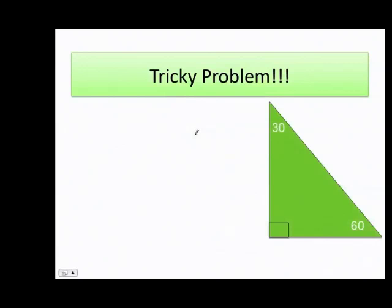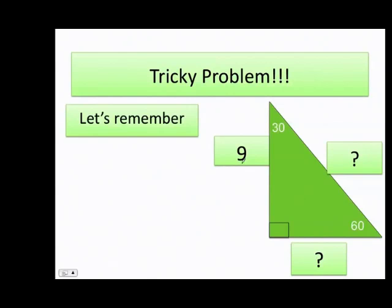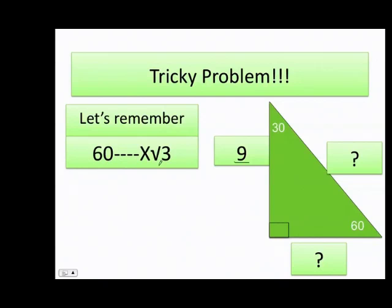Let's do a tricky problem. In all previous triangles we had the square root of 3 on the 60-degree side. But what happens when they give me 9 as a whole number? You might ask: how can I figure out the value of the 30-degree side or the hypotenuse? Not a problem. I'll show you the algebraic approach first, then give you a shortcut. Remember the 60-degree value always equals x times the square root of 3, so I can say 9 equals x times the square root of 3.